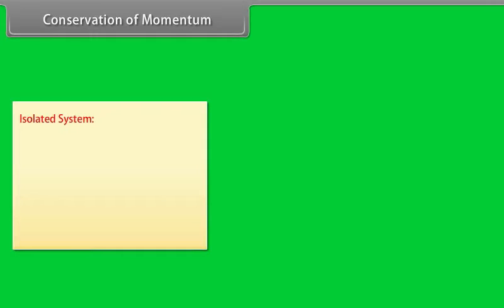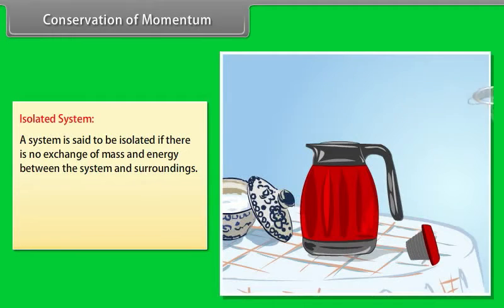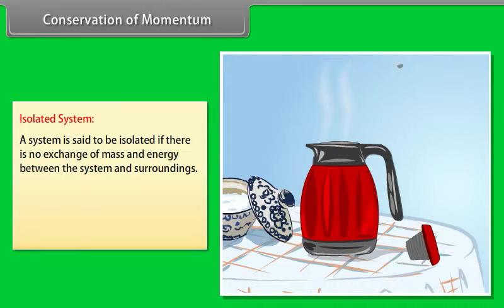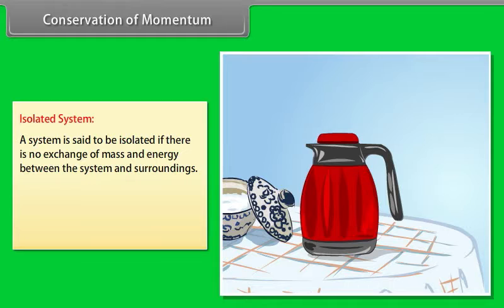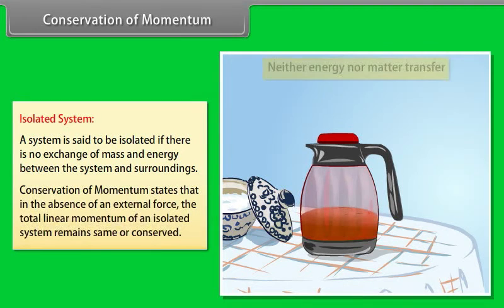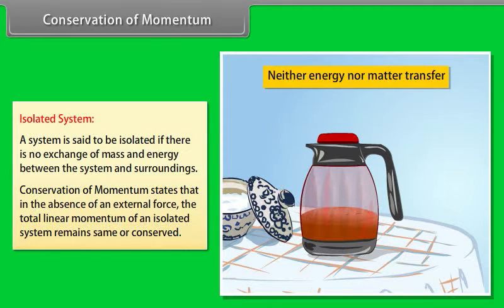Conservation of Momentum — Isolated System: A system is said to be isolated if there is no exchange of mass and energy between the system and its surroundings. Conservation of Momentum states that in the absence of an external force, the total linear momentum of an isolated system remains the same, or is conserved.